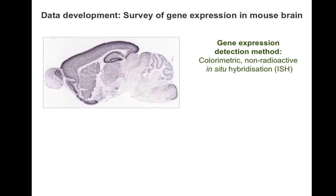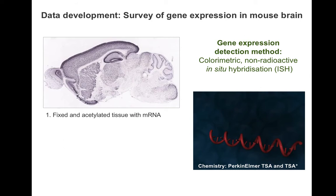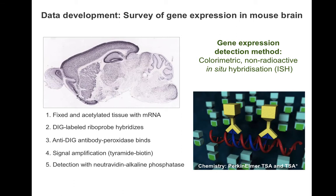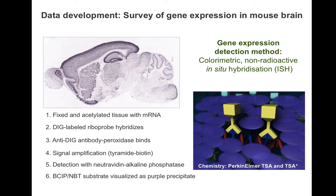Gene expression was detected using a colorimetric in situ hybridization, or ISH assay. In this assay, a tagged gene-specific probe was used to detect existing mRNA in each section. Antibody to the tag binds to any probe present in the cells and enables any detectable signal to be amplified. After a succession of amplification steps, the resulting sections were labeled with a purple precipitate, primarily in the cells that contain the gene being probed for.